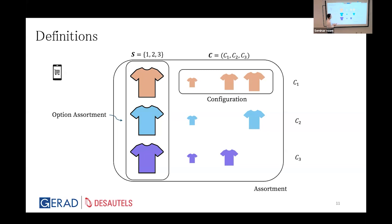The configuration Cj for each option j, and the full set of configurations together with S, jointly construct our assortment.